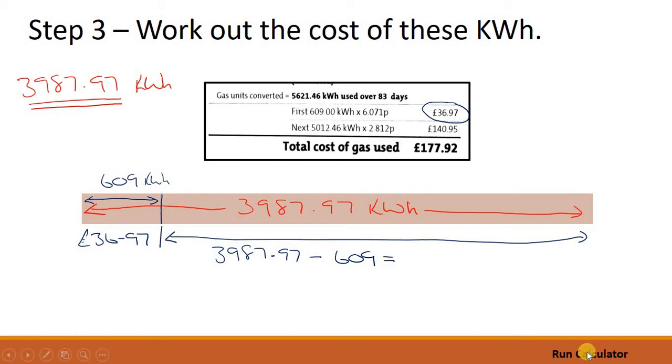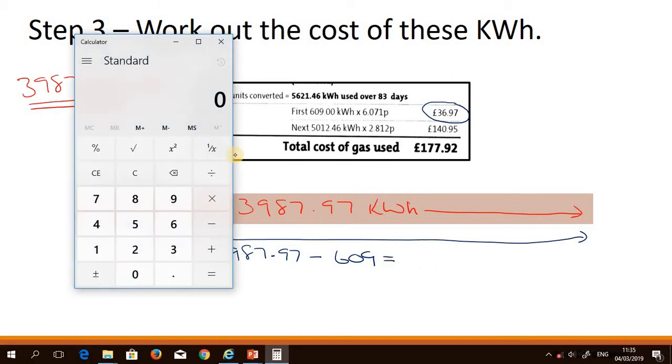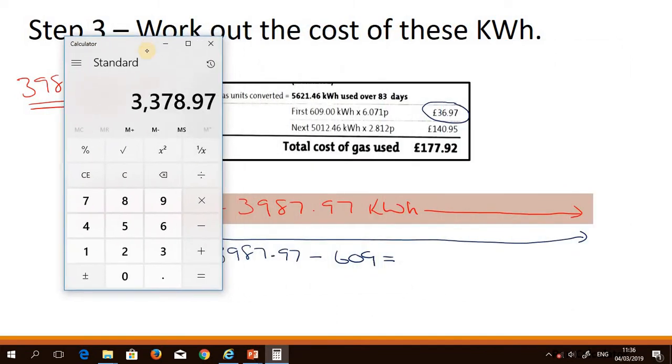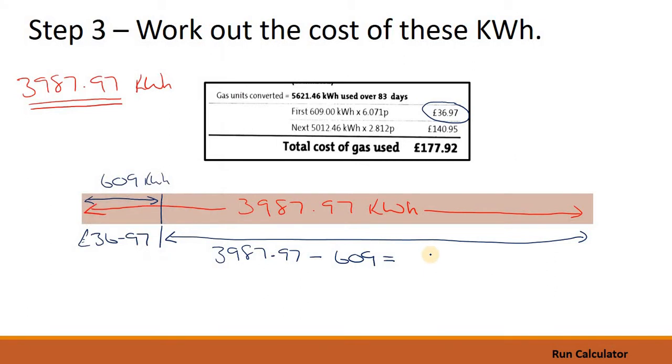Let's work that out. So again, we'll open our calculator and we'll just move it out of the road a bit so we can see what we're doing. So 3,987.97 subtract that 609 because we know how much those cost we don't need to work that out. We've still got to work out the cost of the remaining 3,378.97 kilowatt hours. So let's write that down.